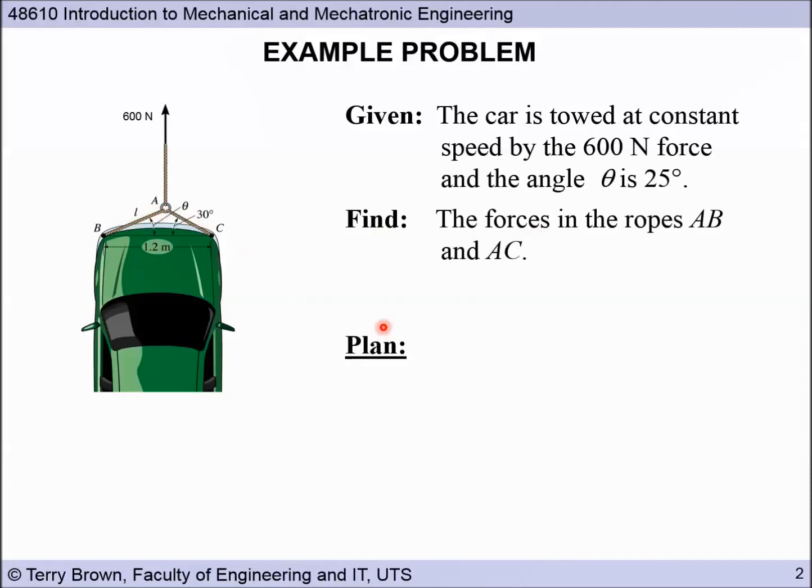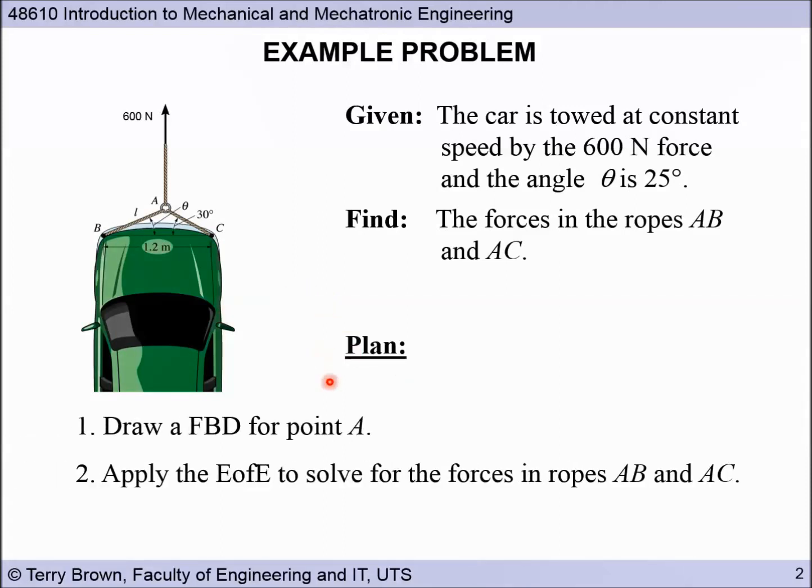So first let's consider what our plan might be for this problem. As with nearly all engineering mechanics problems, the first thing that you need to do is to draw a free body diagram for this link or point A, because that's where our known force is acting and our two unknowns are acting on that particle. Then we're going to apply the equations of equilibrium to solve for the unknown forces in each of the ropes. We can use the equations of equilibrium because even though this thing is moving, it is in equilibrium because we're told that it's moving at a constant speed.